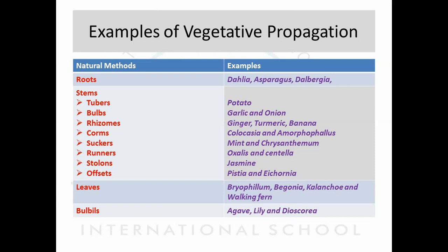Offsets are found in Pistia and Eichhornia, which are aquatic plants that float on the water surface. With the help of offsets they float and propagate. These offsets developed in these plants are part of the stem. These are different vegetative propagules developed in different plant bodies or different species.